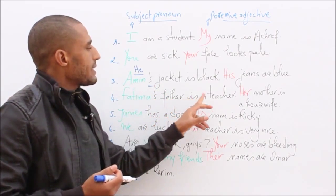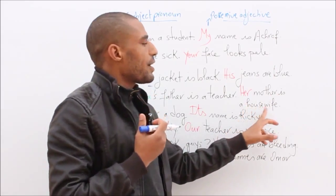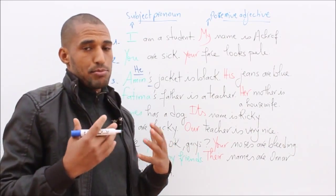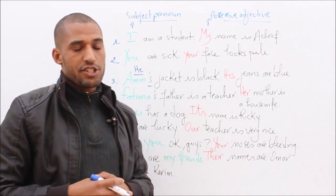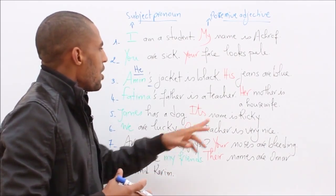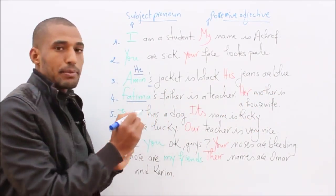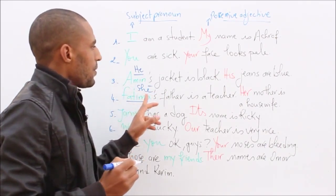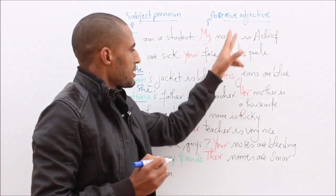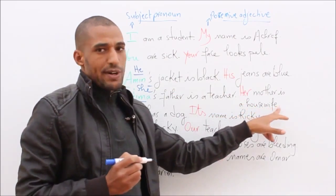Number four: Fatima's father is a teacher. Her mother is a housewife. A housewife is a woman who doesn't have professional work — she stays at home taking care of her children, her husband, and doing housework. So 'her' refers to Fatima. Fatima's appropriate subject pronoun is 'she', and the possessive adjective for 'she' is 'her'. Her mother is a housewife.